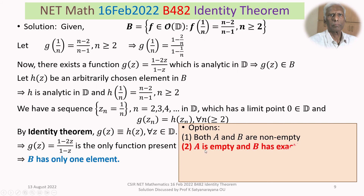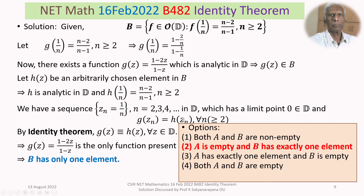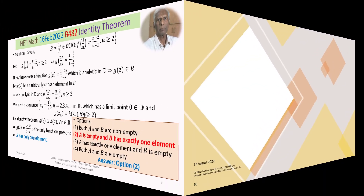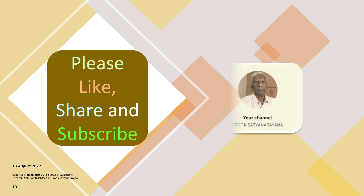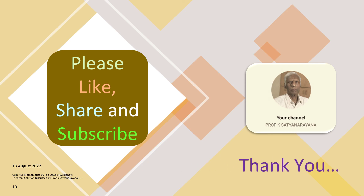Our answer is Option 2: A is empty and B has exactly one element. That completes the discussion of this problem, which is an application of the Identity Theorem in Complex Analysis. This is a very important question, and I hope you have understood the solution. Go on working out more problems on the Identity Theorem. I wish you all the best. Thank you.